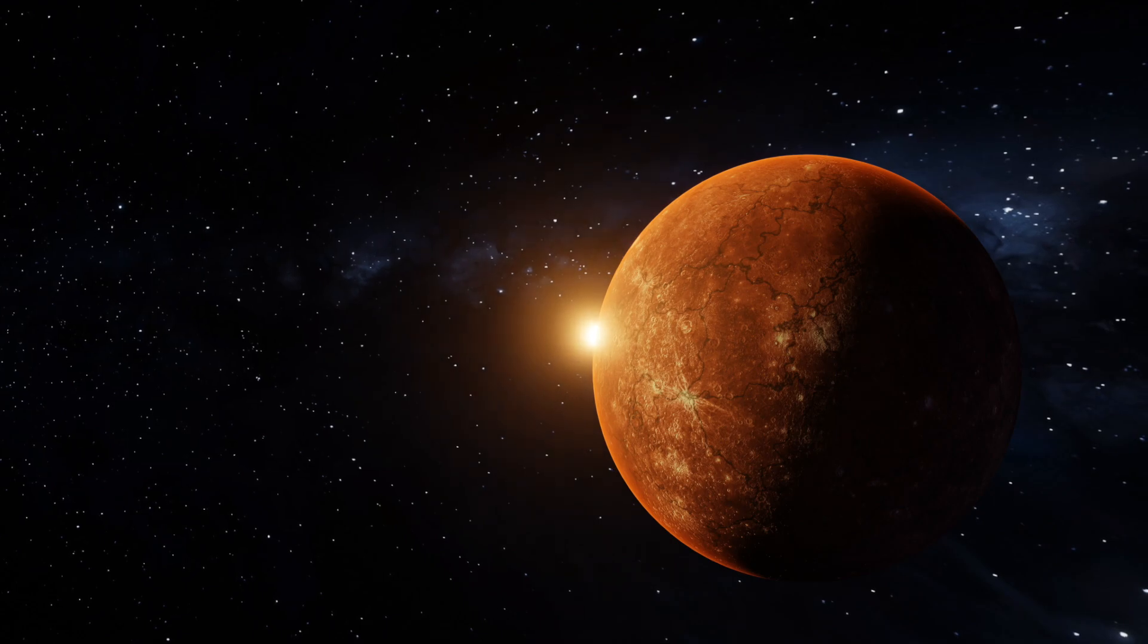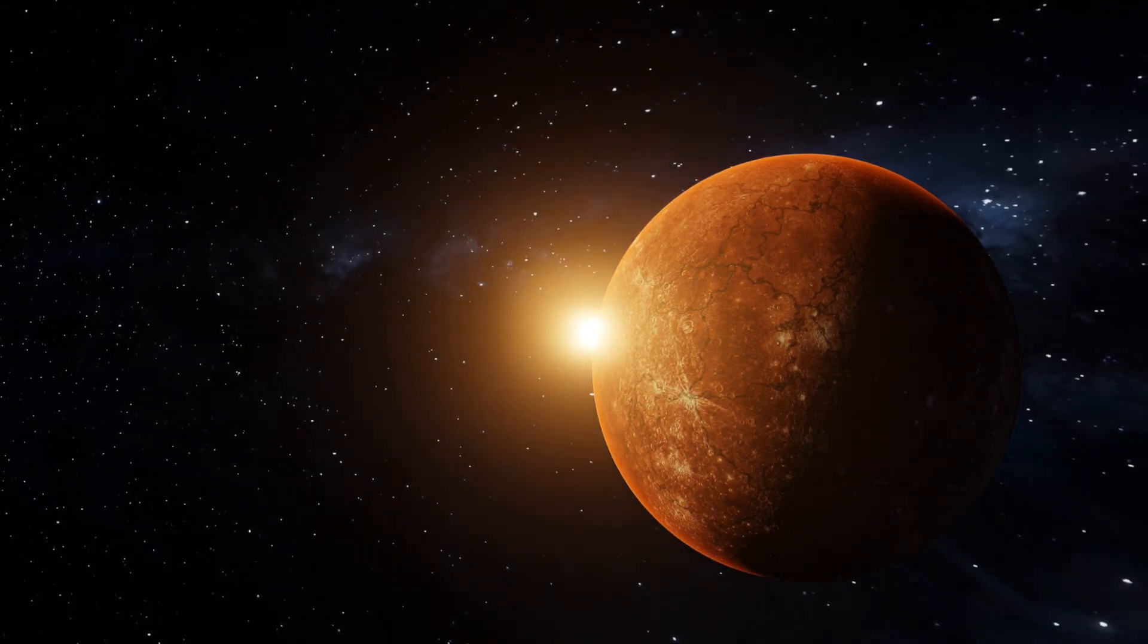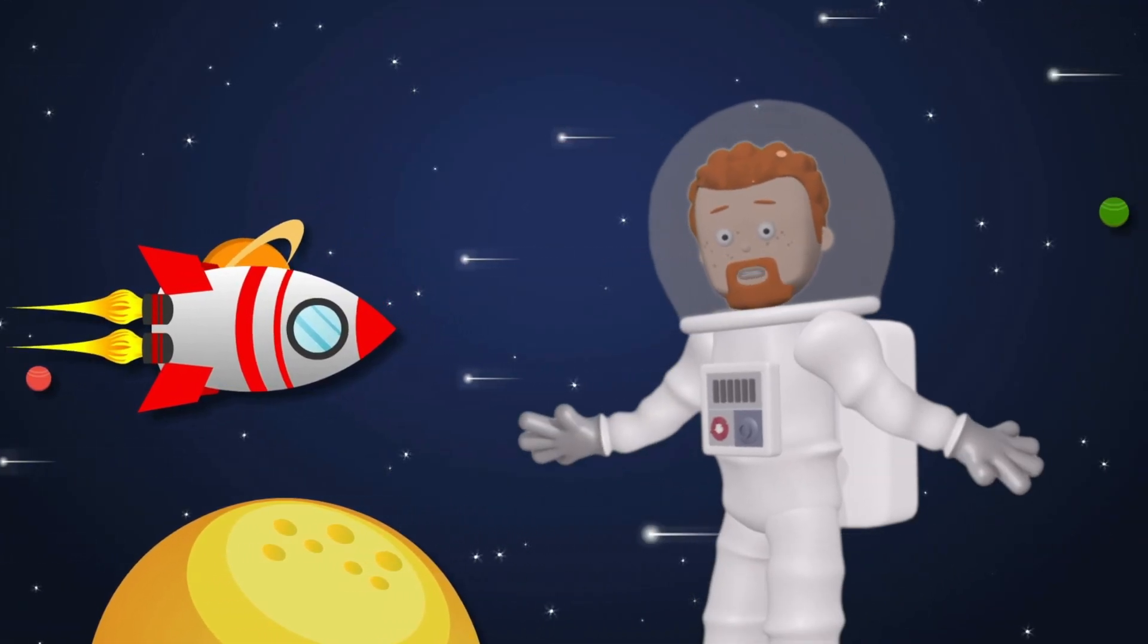And at night, it can drop to minus 290 degrees Fahrenheit. Talk about extreme. Our final stop is the largest planet in our solar system, Jupiter.